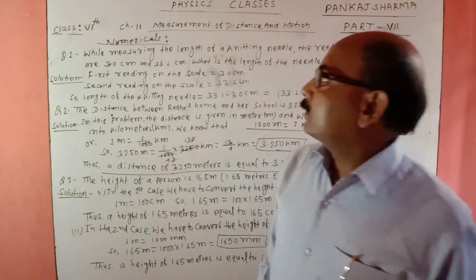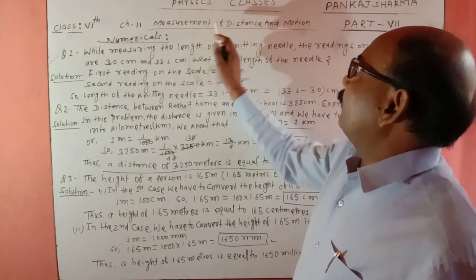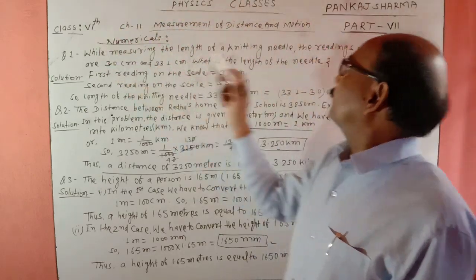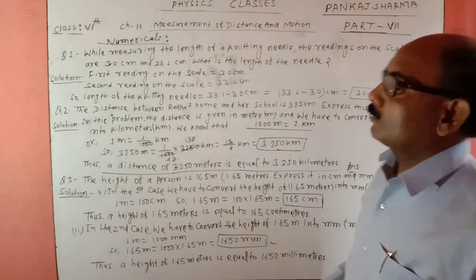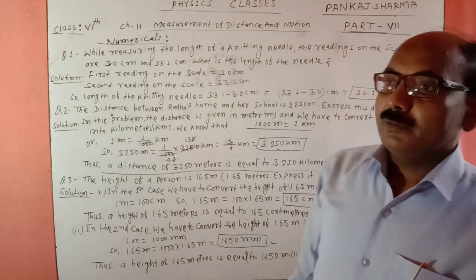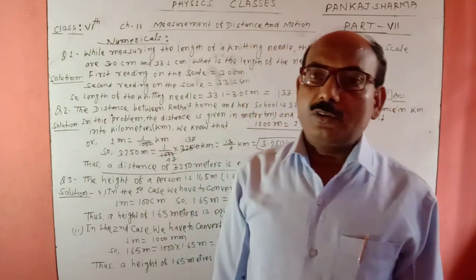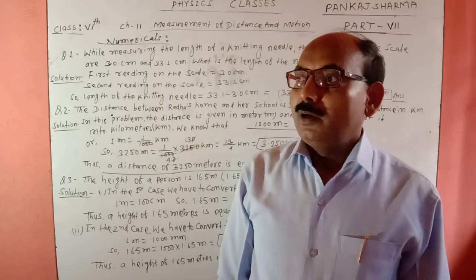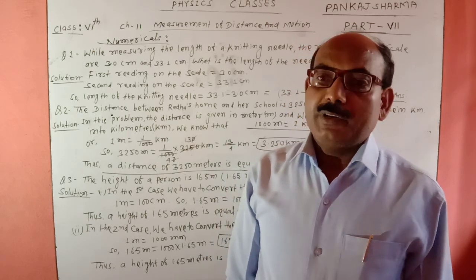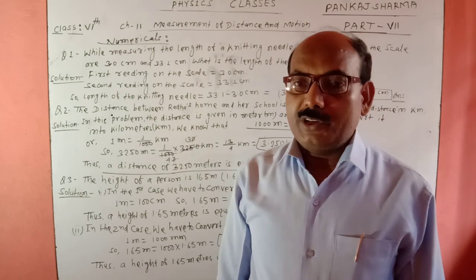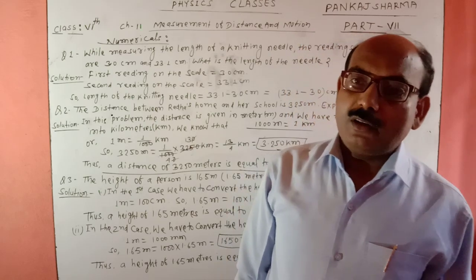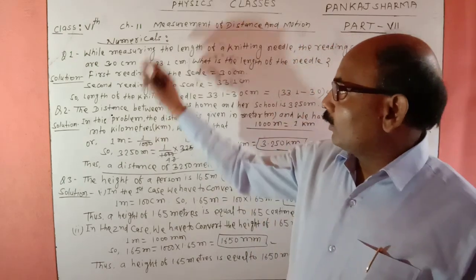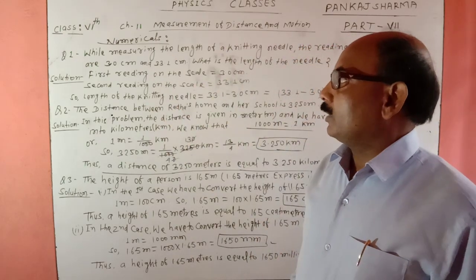Today we will discuss Measurement of Distance and Motion, Chapter 3 Classics Part Series. In this chapter, we will discuss all the important points topic-wise. This chapter is fully completed and there are some numericals as well. Here are three numericals from this chapter.